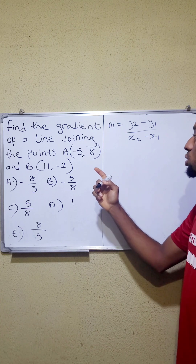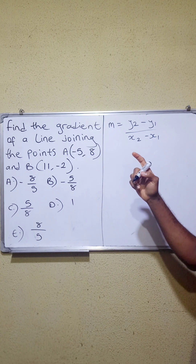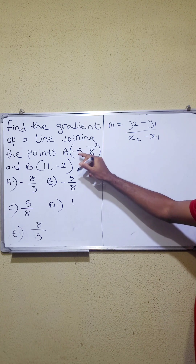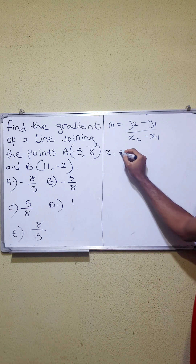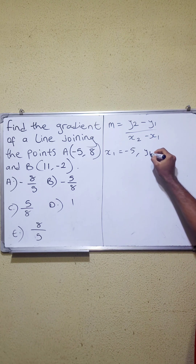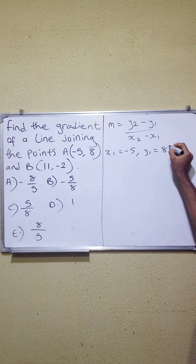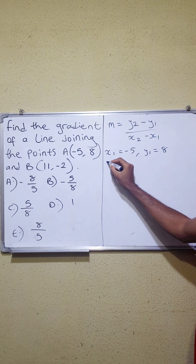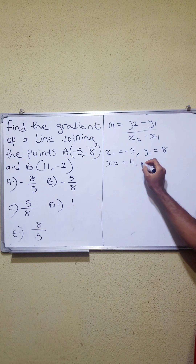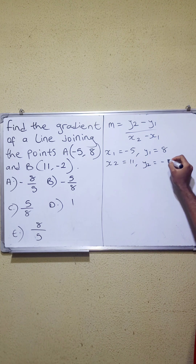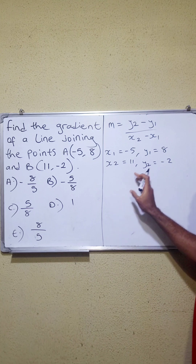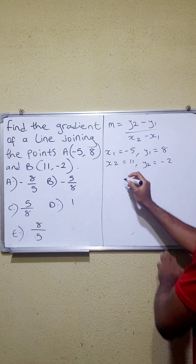Now we need to get our x1, y1 and x2, y2. x1 = -5, y1 = 8, x2 = 11, y2 = -2. Now let us put this into the formula.